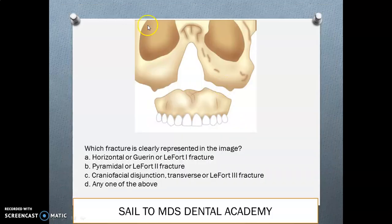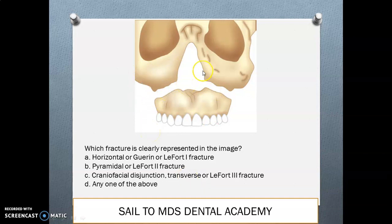Now, which fracture is clearly represented in the image? First, know the different names: Le Fort 1 is also known as the Guerin or horizontal fracture; Le Fort 2 is also known as the pyramidal fracture; Le Fort 3 is also known as craniofacial disjunction; and there is also the transverse fracture. This picture depicts the Le Fort 1 fracture.